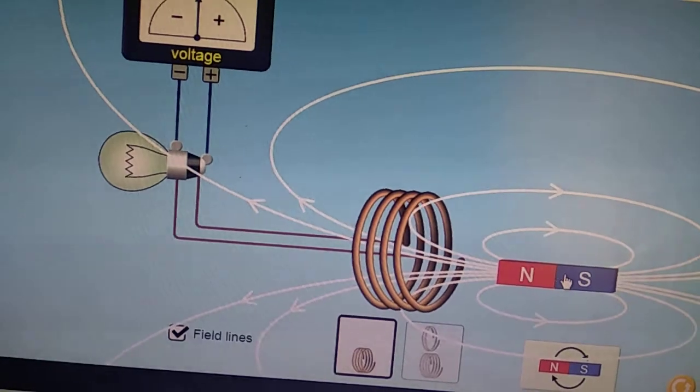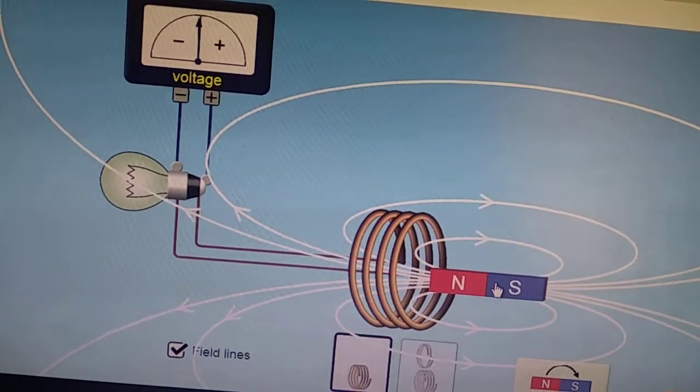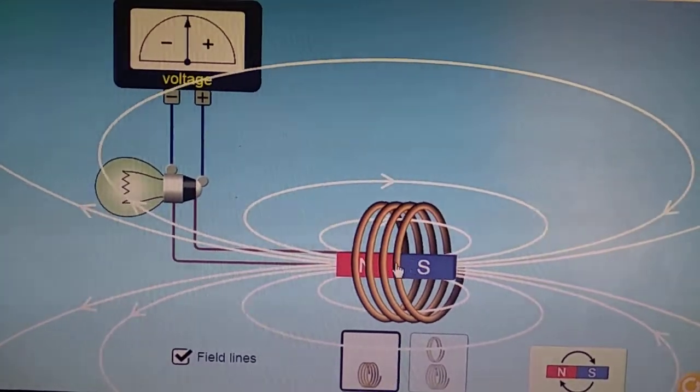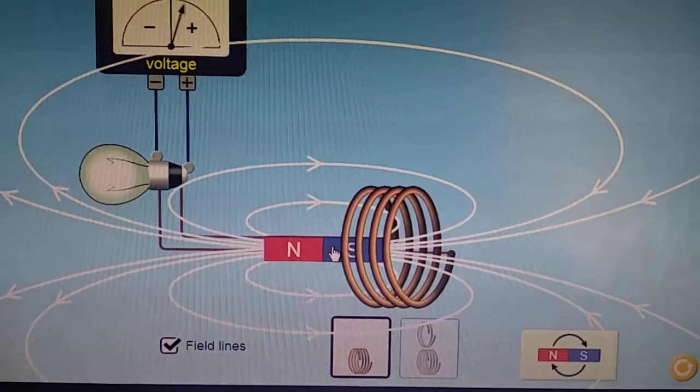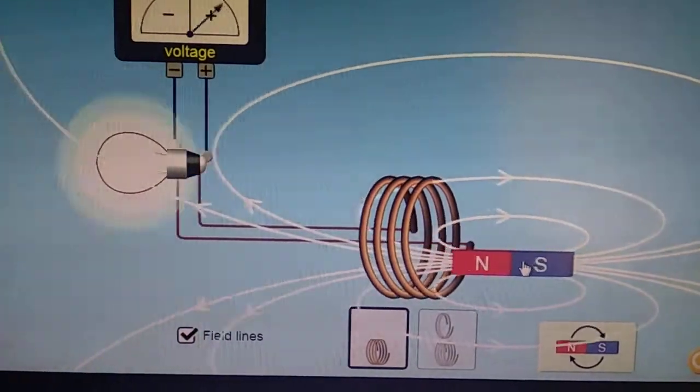As the more the number of lines crossing, more is the magnetic flux, more is the induced EMF, more is the intensity of glow of bulb. Maximum field, maximum intensity of the bulb.